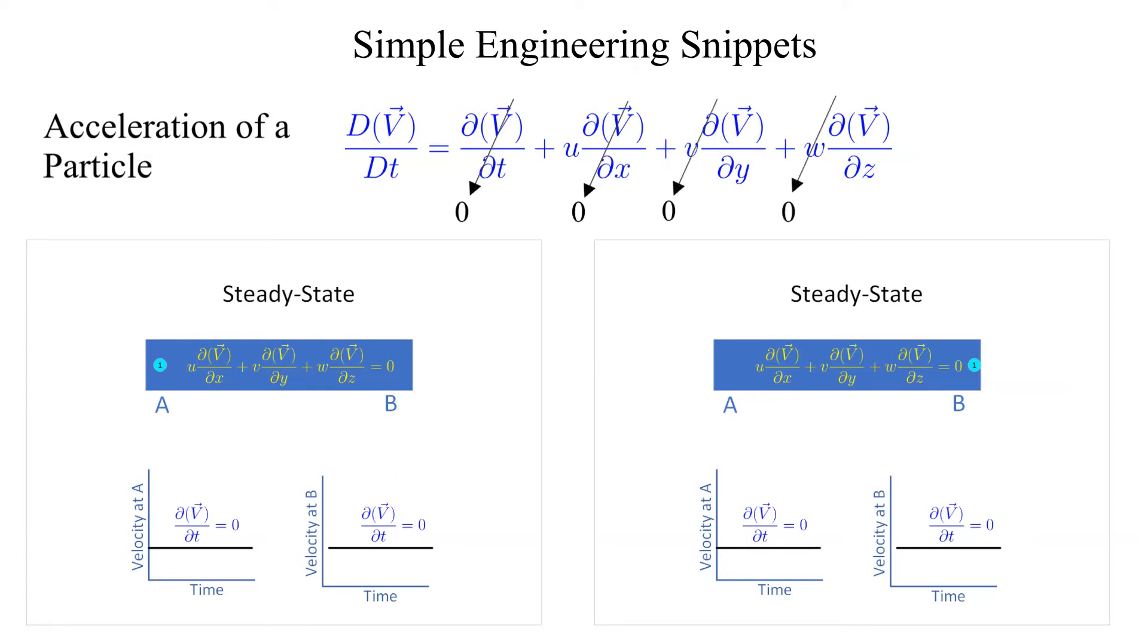The y and z components of velocity are also zero. All terms are zero so the acceleration of the particle as it moves from location A to B is zero.